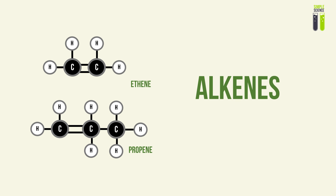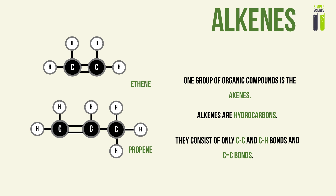Last week we looked at the alkane. Alkanes are basically a hydrocarbon that is saturated and can undergo very few reactions. This week we are going to be looking at alkenes. Alkenes are also hydrocarbons — they consist of carbon-to-carbon and carbon-to-hydrogen bonds. However, they also consist of carbon-to-carbon double bonds, and that is basically the only difference between alkane and alkene.